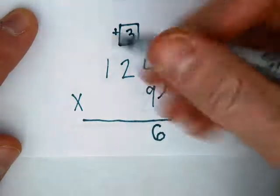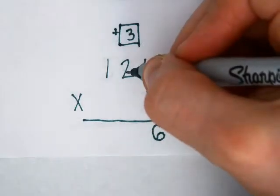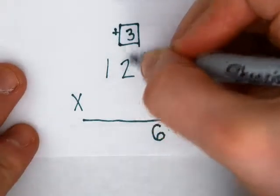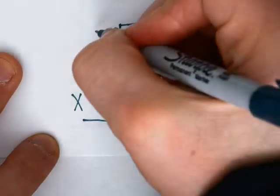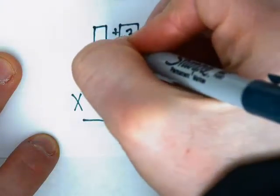And that's what you're going to be adding. Then you do nine times two, that's 18, plus three is 21. You put down the one, and you're going to carry the two over here this time.